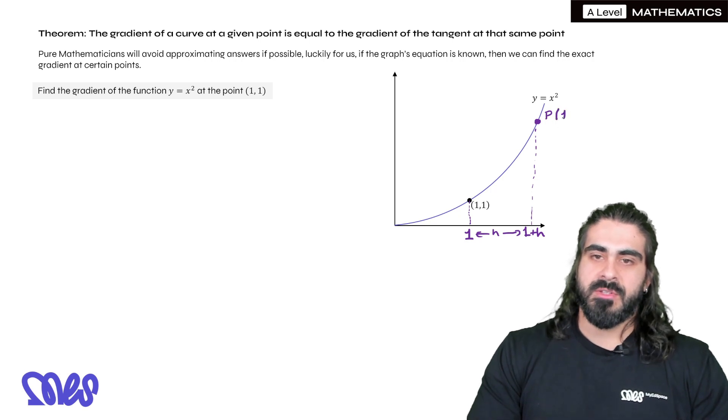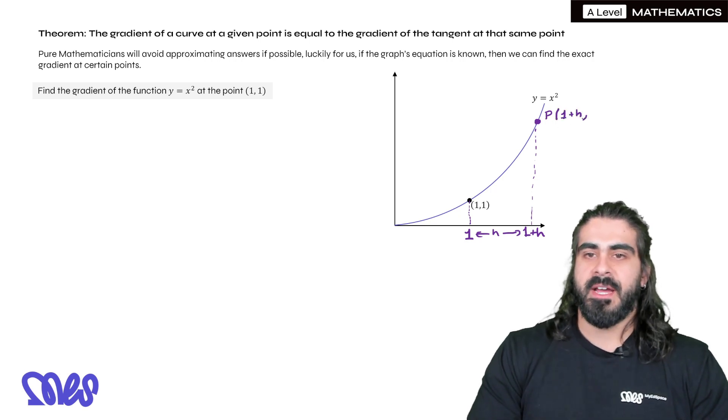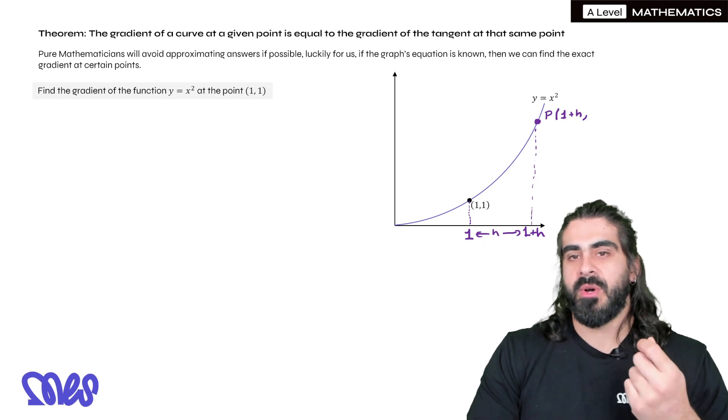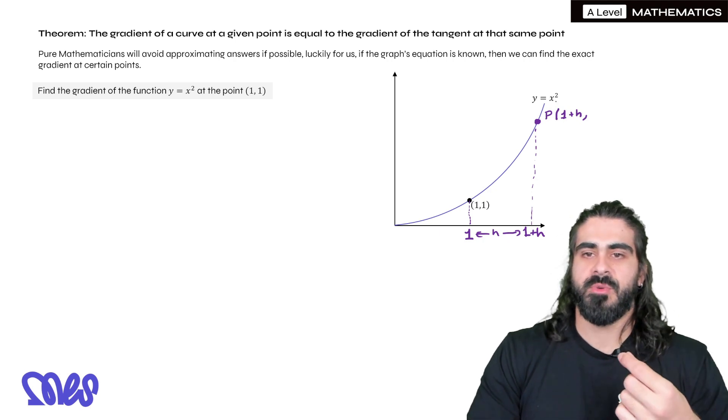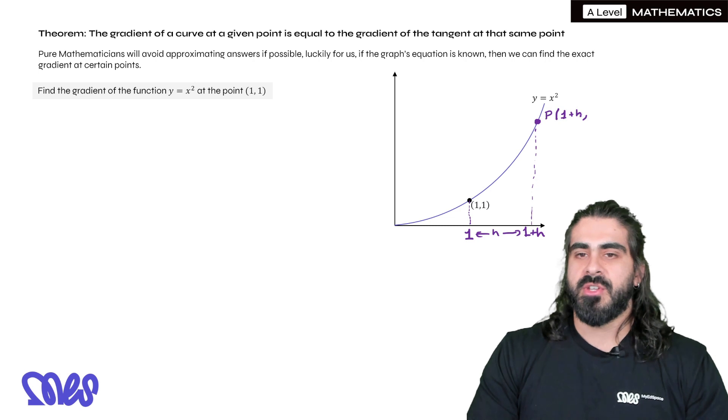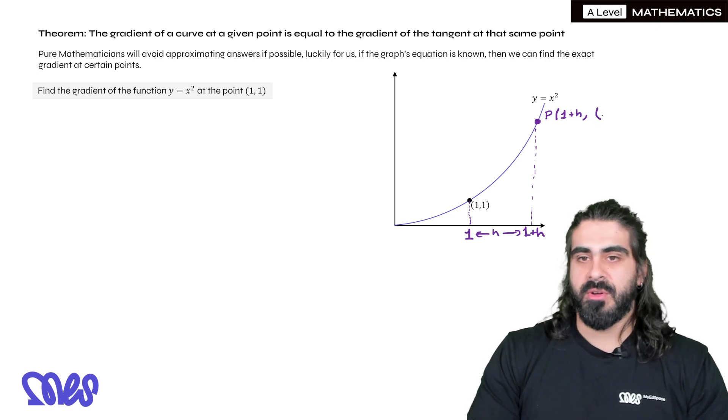So what are the coordinates of P then? Well the coordinates of P is (1 + h), and then the y coordinate, remember the graph is y equals x squared. So whatever the x value is, you're just going to square it. So if the x value is 1 + h, we're going to square it: (1 + h)². And that's our coordinates for P.